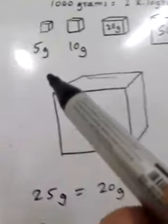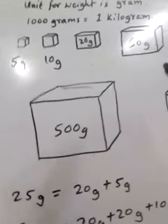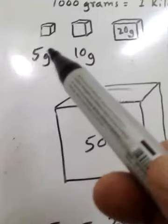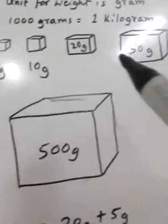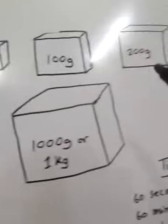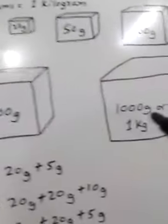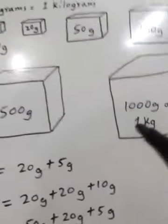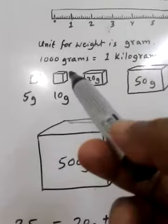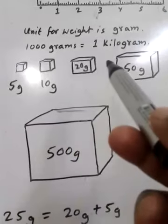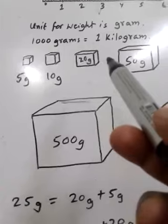In the shop we can see different kinds of weights: 5 gram, 10 gram, 20 gram, 50 gram, 100 gram, 200 gram, 500 gram, 1000 gram. And 1000 gram equals 1 kilogram. You need to remember: 1000 gram equals 1 kilogram.